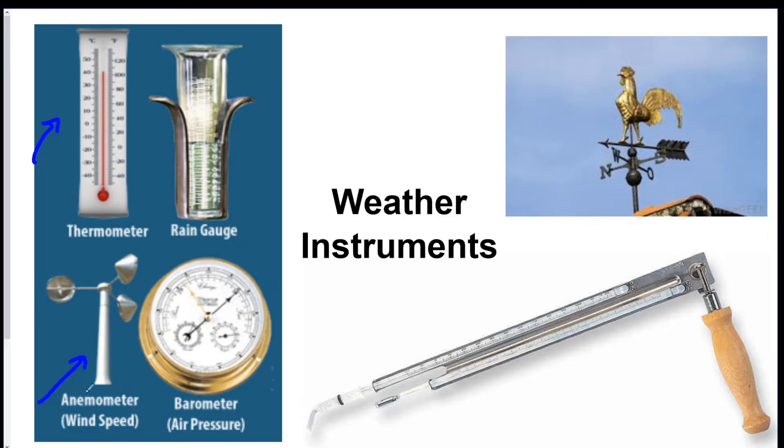This one down here is an anemometer. It measures the wind speed and generally measures in the unit knots, K-N-O-T-S. It could also measure in miles per hour.